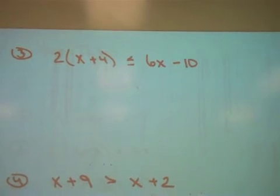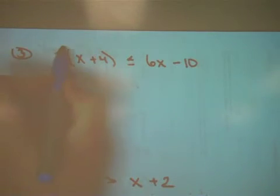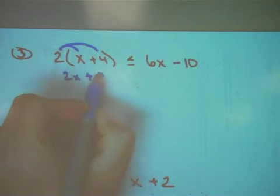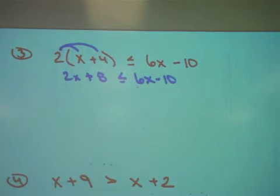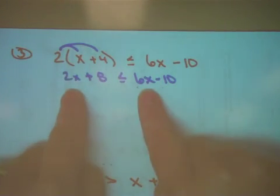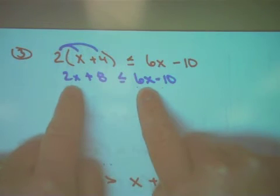Example 3. Now I have a distributive property as well as having variables on both sides. 2 times x is 2x. 2 times 4 is a positive 8, is less than or equal to 6x minus 10. Now, we have both numbers and letters on both sides. You're safer to start with the variables.